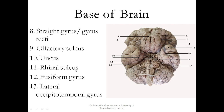Then you have the rhinal sulcus, labeled 11. And then you have the fusiform gyrus, number 12, which is responsible for face recognition. Then you have the lateral occipitotemporal gyrus.